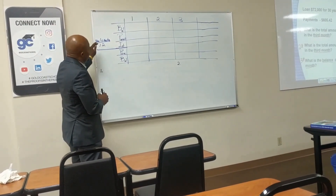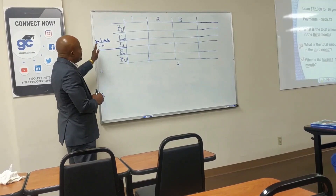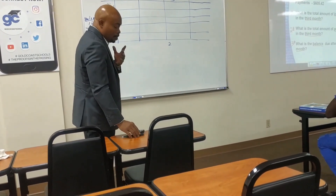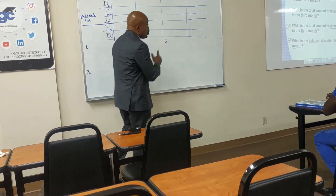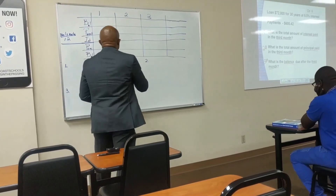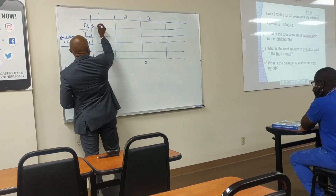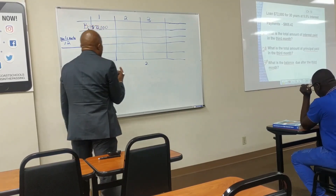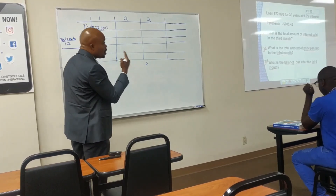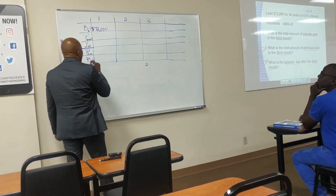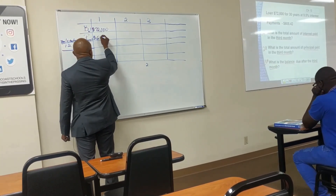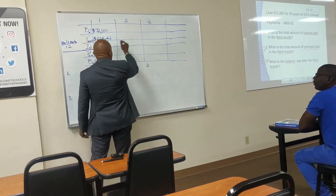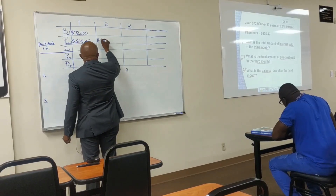Here is the formula: balance times rate divided by 12. We divide by 12 because we want the monthly interest, not the annual rate. We have a loan for $72,000 and a monthly payment of $605.42. This payment is constant — it will not change throughout the life of the loan.